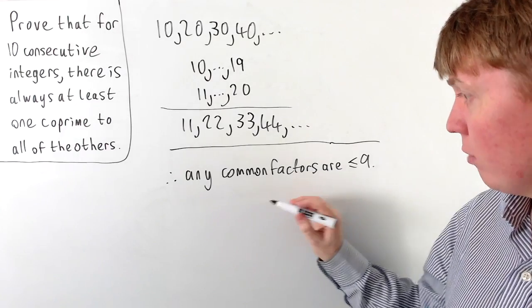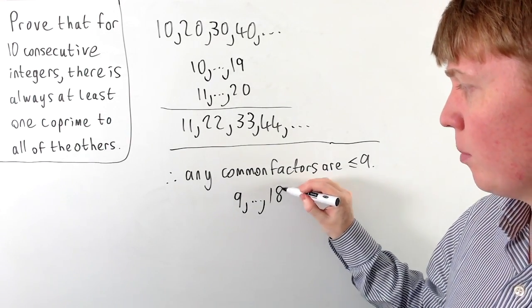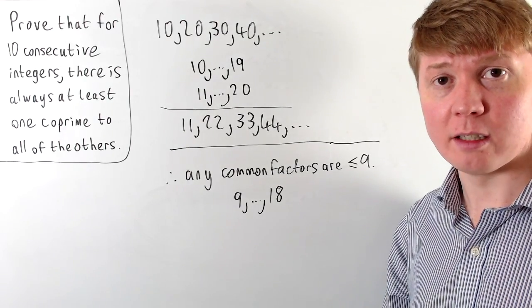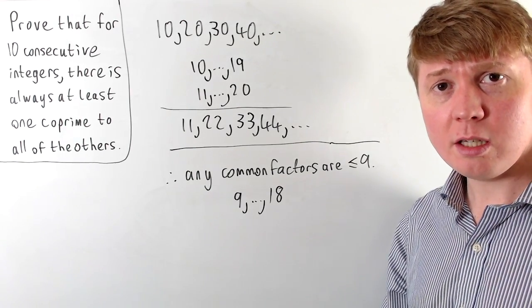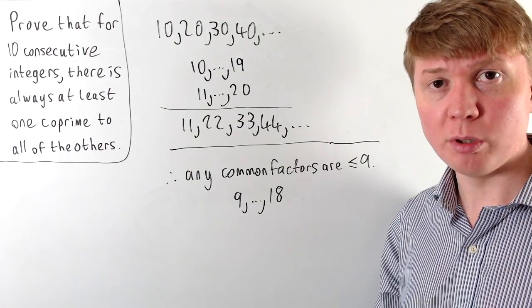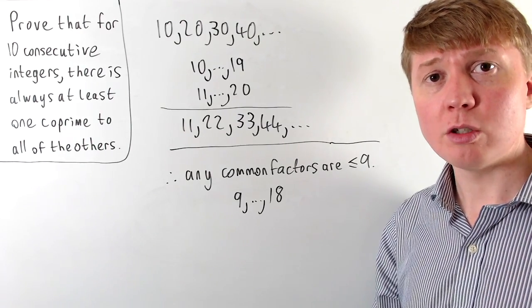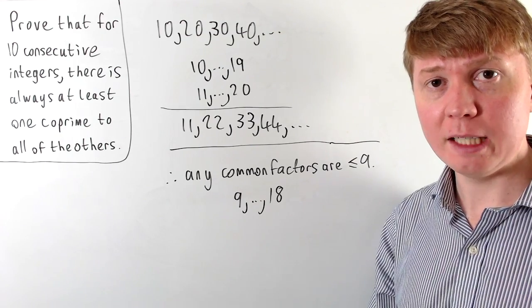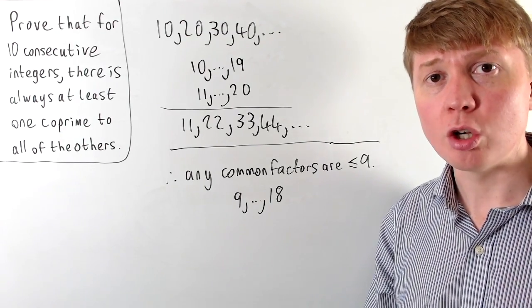So we can conclude as our first step towards this proof that any common factors have to be less than or equal to 9. We can't have a common factor of 10 or above, because our 10 consecutive integers are too close to each other. However, we could have a common factor of 9 — for example, we could go from 9 up to 18 for our 10 consecutive integers.